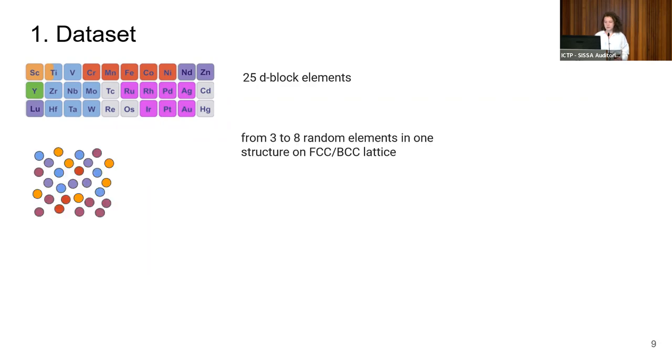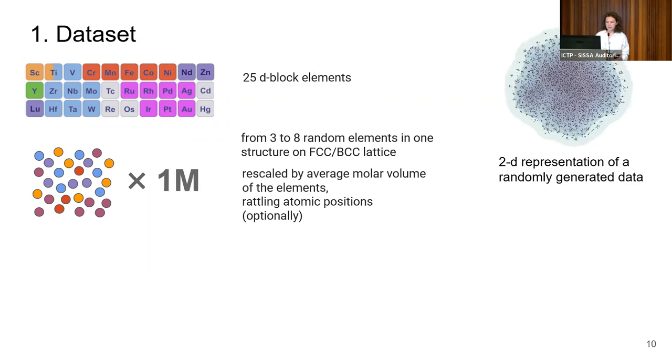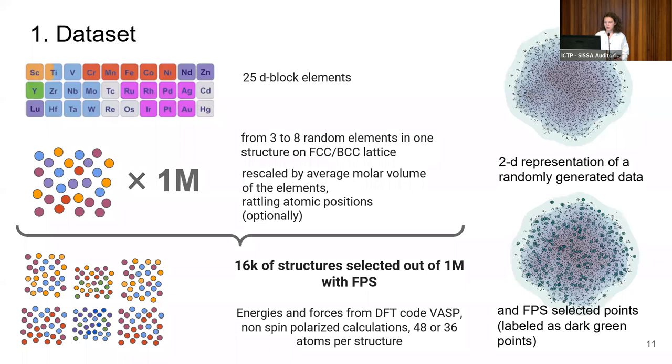Based on these 25 elements, we created structures either on FCC or BCC lattice which contains from 3 to 8 random chemical elements. We shuffled these structures or not, so we have on-lattice and off-lattice structures. We created 1 million structures for each category. You can see on the right-hand side the 2D representation of the randomly generated data. With FPS selection, we secured uniform sampling of our randomly generated data. All selected structures were recomputed with plane wave VASP code with non-spin polarized DFT containing around 36 to 48 atoms per structure.